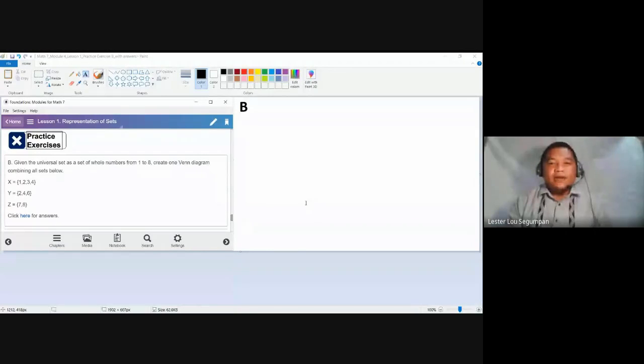Consider that there is a given universal set. Let us use another color so it can be emphasized. There is a color universal set. Again, the universal set is a set under consideration of a specific problem. For this problem, it contains the whole numbers from 1 to 8.